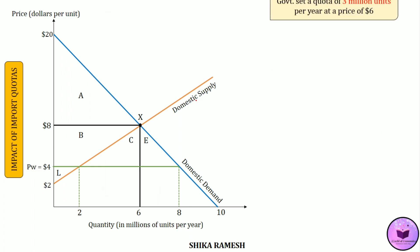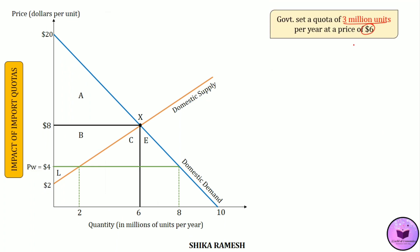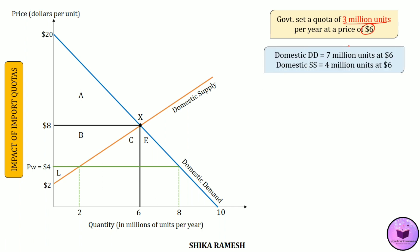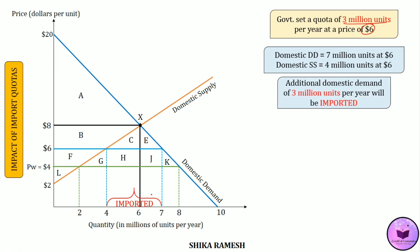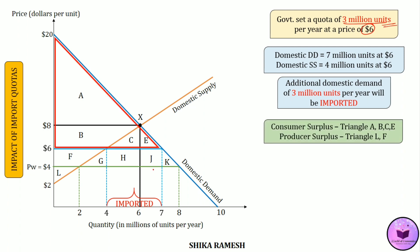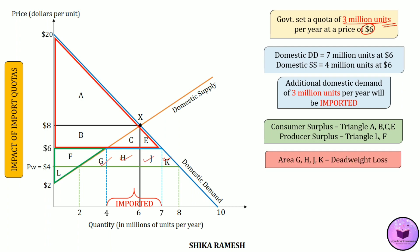A tariff of $2 per unit creates the same equilibrium as an import quota of 3 million units per year. Suppose the government sets an import quota of 3 million units per year at a price of $6 per unit. At this price, domestic demand is 7 million units and domestic supply is 4 million units — the same as in the tariff case — and the additional domestic demand of 3 million units will be imported, equal to the import quota. The consumer surplus is represented by the red triangle and the producer surplus by the green triangle. Consumer surplus is less than under free trade while producer surplus is greater, and the areas G, H, J, and K represent deadweight loss, while the rectangle HJ represents the foreign supplier's revenue.